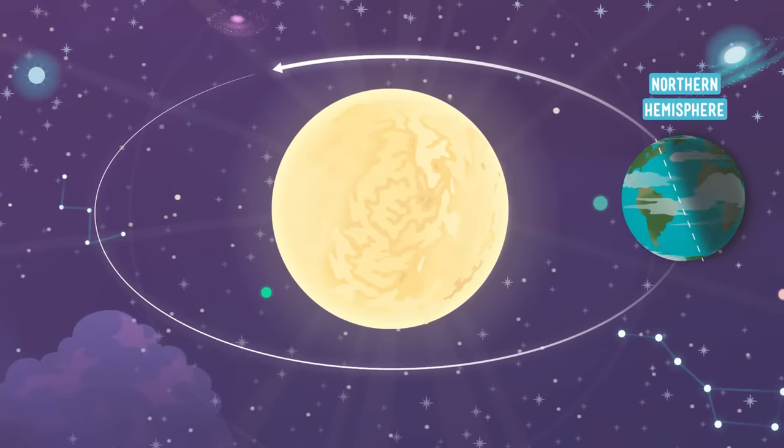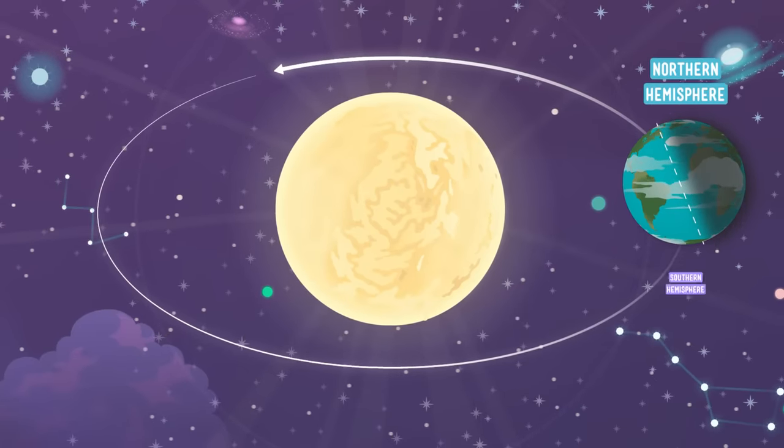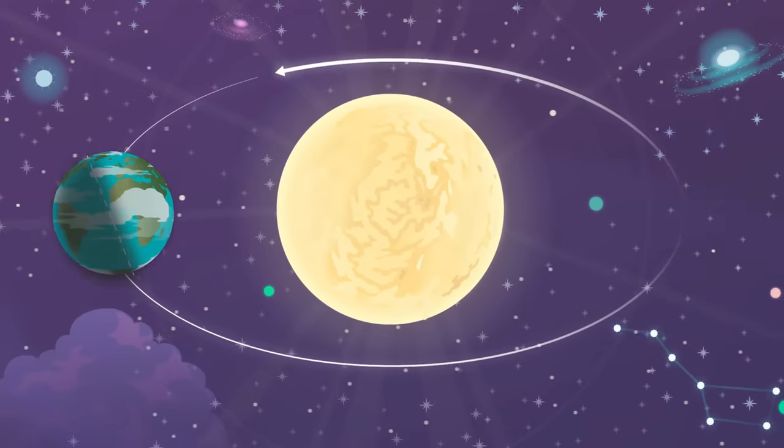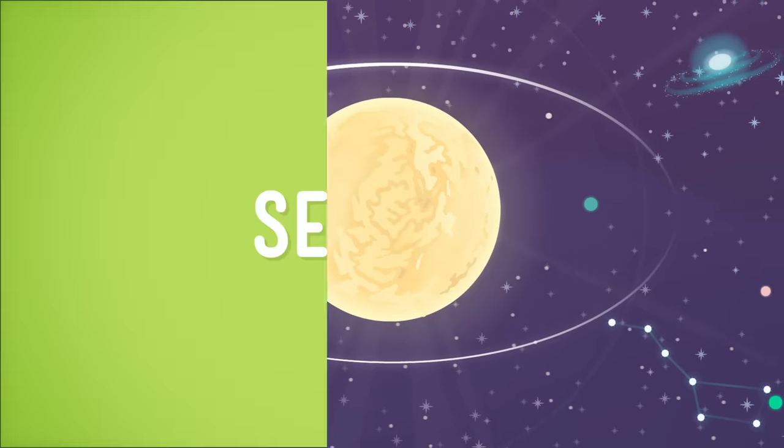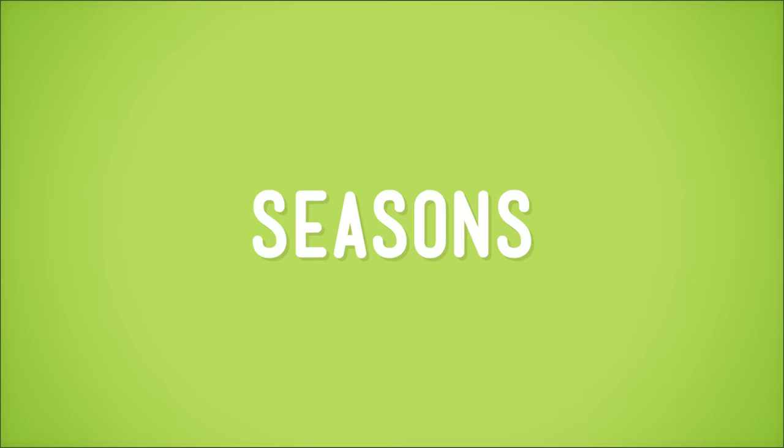At certain times of the year, you see the northern hemisphere leans towards the sun, and the southern hemisphere leans away. And at other times, the southern hemisphere leans towards the sun, and the northern hemisphere leans away. That pattern, my friend, is what makes seasons.